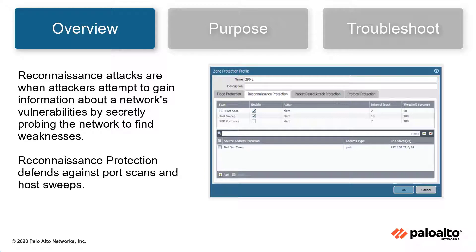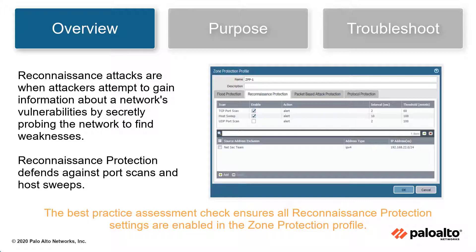Reconnaissance attacks are when attackers attempt to gain information about a network's vulnerabilities by secretly probing the network to find weaknesses. Reconnaissance protection defends against port scans and host sweeps. The Reconnaissance Protection Best Practice Check ensures that all Reconnaissance Protection settings are enabled in the Zone Protection Profile.